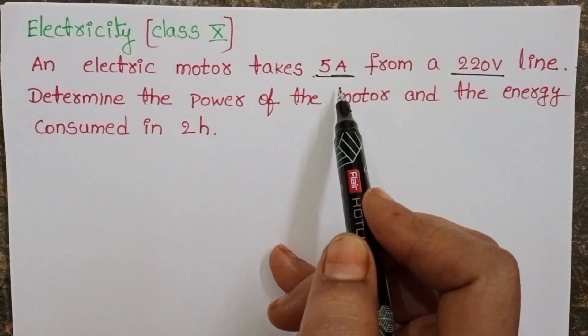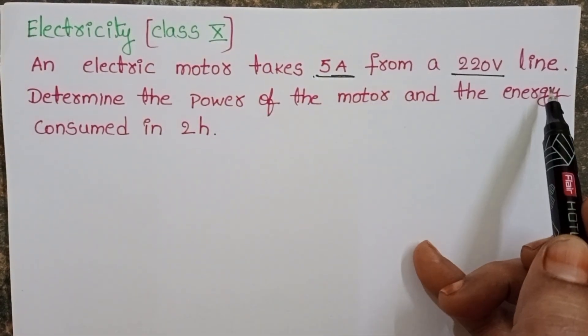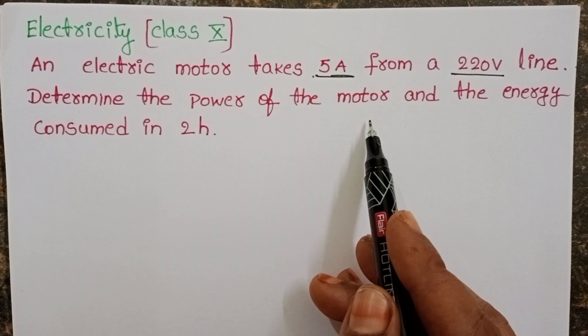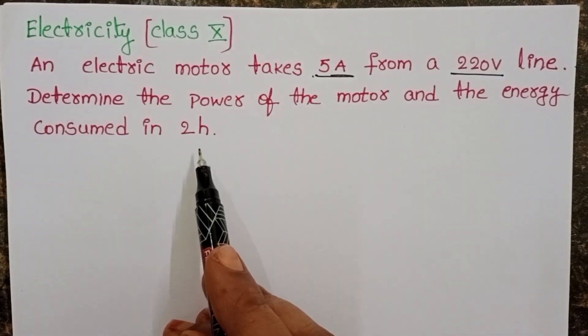An electric motor takes 5 amperes from a 220 volt line. Determine the power of the motor and energy consumed in 2 hours.